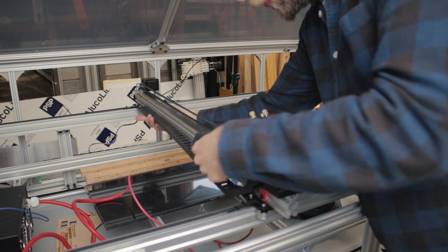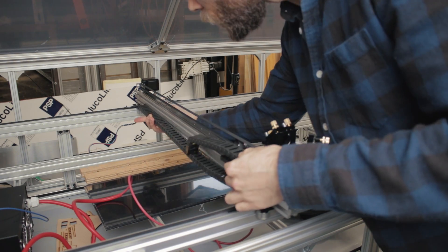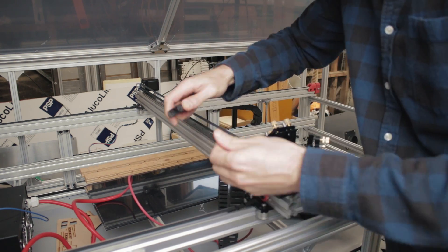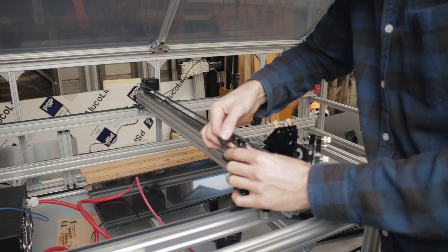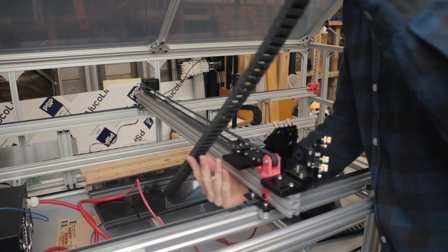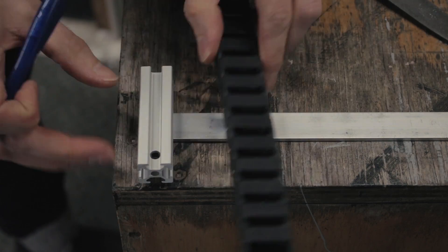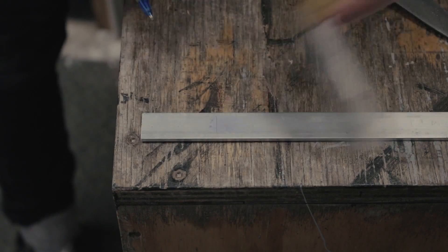And I'll place a couple more on the other uprights as well. Onto the chain for the x-axis. There's a nice cozy little spot for it behind the rail and then that just mounts up onto the carriage plate.